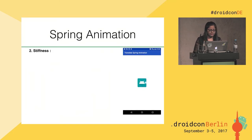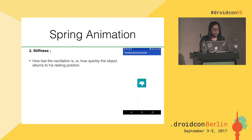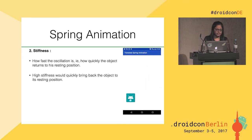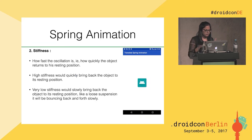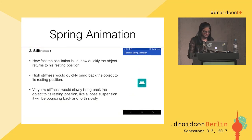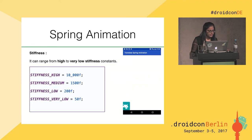Stiffness means how quickly the object can return to its resting position. If the spring has high stiffness, it would quickly snap the object back to its resting position. If the stiffness is low, it would slowly bring back the object, like a loose suspension, and make the object bounce back and forth slowly. This also has four constants: high, medium, low, and very low. You can use them or any other positive value within the range.